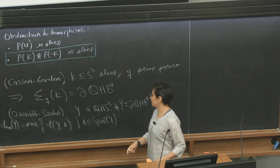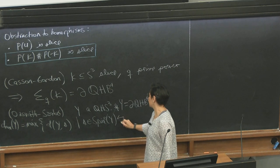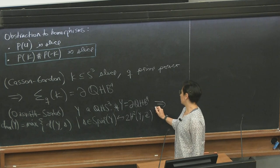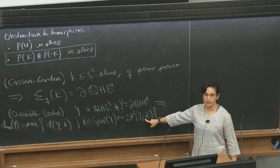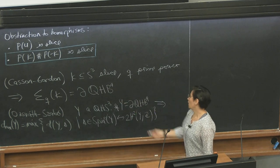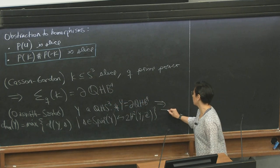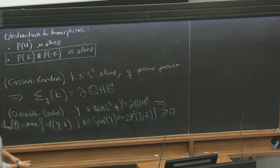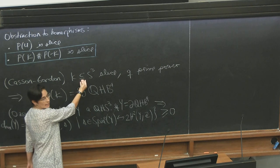I'll define D_max of Y to be the maximum of all D-invariants over any spin-c structure. Spin-c structures are in one-to-one correspondence with twice the second cohomology of my rational homology three-sphere, which is a finite abelian group, so I can take the maximum. The way we use this: if Y bounds a rational homology four-ball, then D_max is going to be bigger than or equal to zero. So if I show that D_max is negative, then I'm showing the three-manifold does not bound a rational homology four-ball, and therefore my knot is not slice.